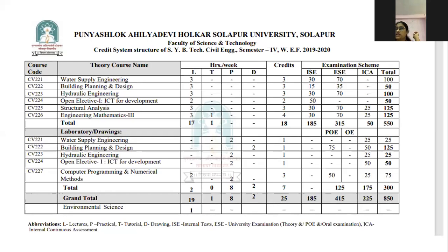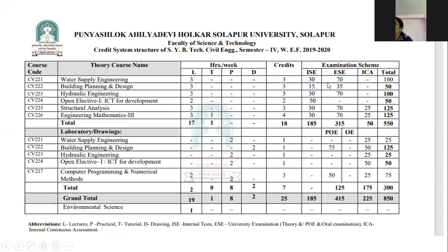I'm dealing with the subject Water Supply Engineering CV221. This subject has three lectures per week, and it is also having two hours of practical. Let us see how we will be able to conduct the practicals — if unlocking starts, we may get together, otherwise the practicals may also be conducted through the online forum. For this subject, three IACs you are supposed to appear, having 30 marks for the IAC, 70 marks for the theory exam, and 25 marks for the ICA. So total, you are going to get 125 marks from this subject.